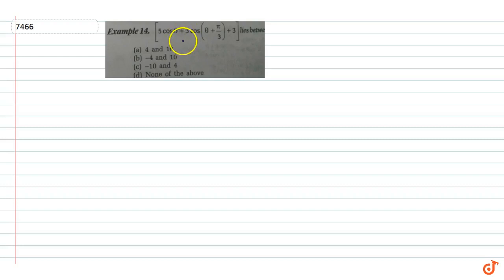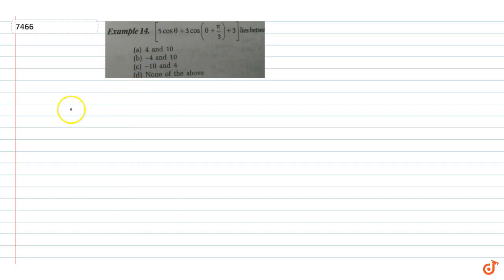In this question, 5cosθ + 3cos(θ + π/3) + 3 lies between which of the following.